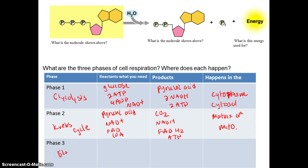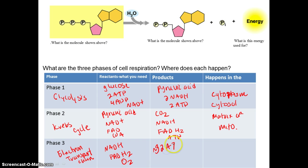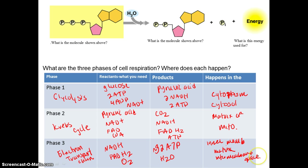The last phase is the electron transport chain. You need the electron carriers with all that energy and oxygen. You make about 32 ATPs and produce water. It happens in the inner membrane and also involves the matrix and the intermembrane space of the mitochondria. That summarizes the three phases of cellular respiration.